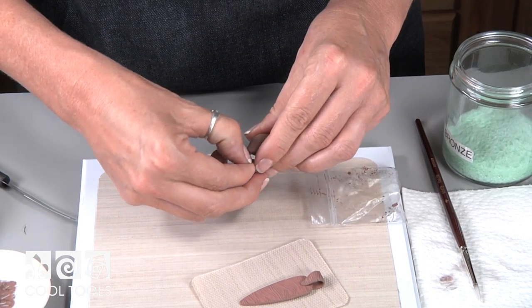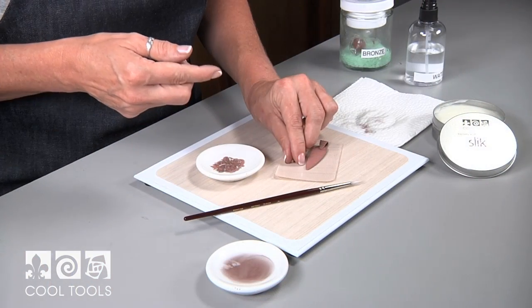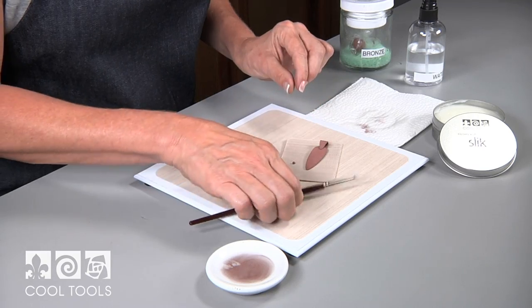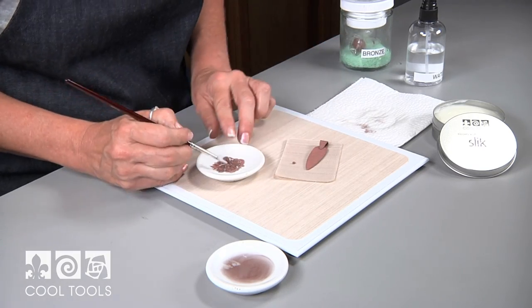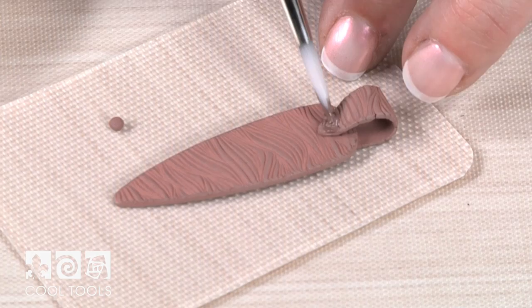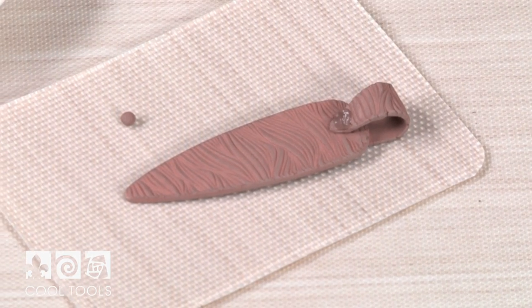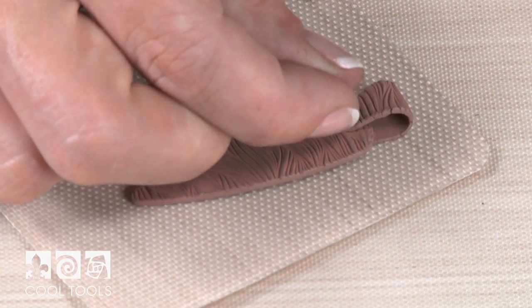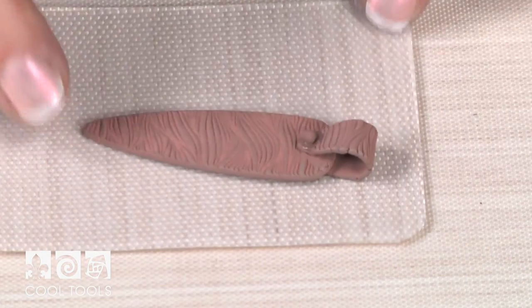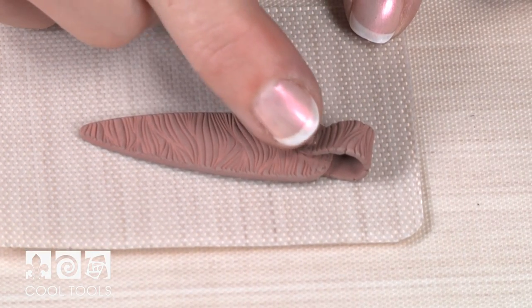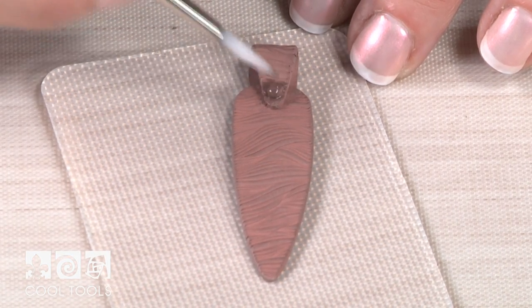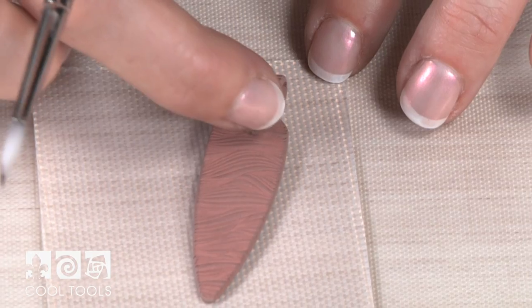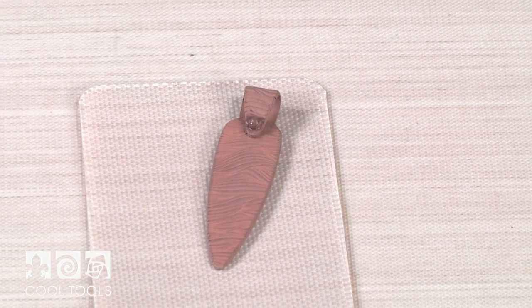Pinch a tiny piece of clay from your scrap and roll it into a ball. Use a small dab of the slip to glue into place. Press gently. Clean up any slip around the edges with the slightly damp brush, then set everything aside to dry completely.